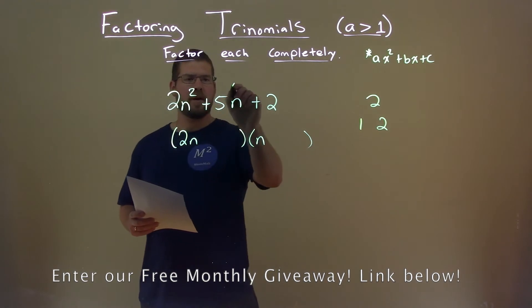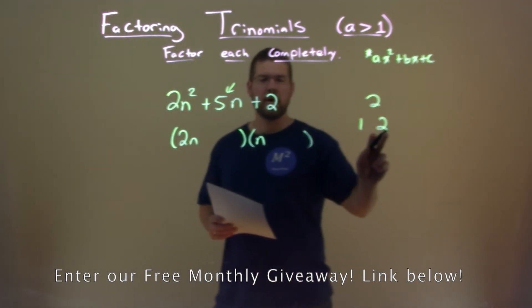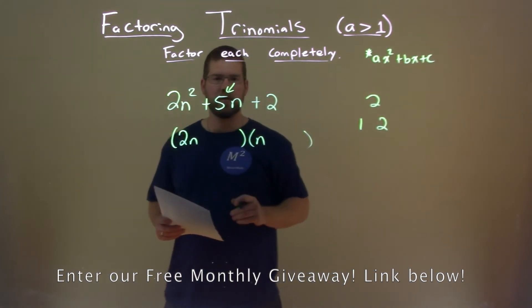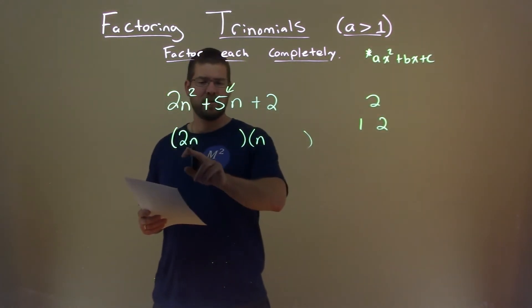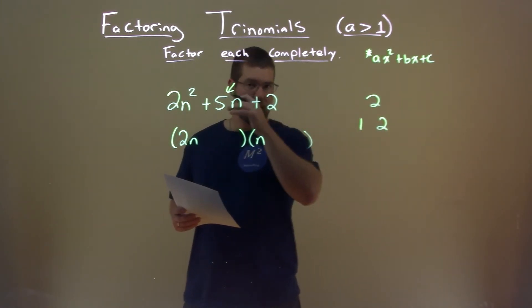We now look at the b value. And we say, 2 times one of these numbers plus 1 times the other number gets us 5. And the closest thing I see is, well, if 2 times 2 is 4, right? And then plus 1 is 5, there we have it.